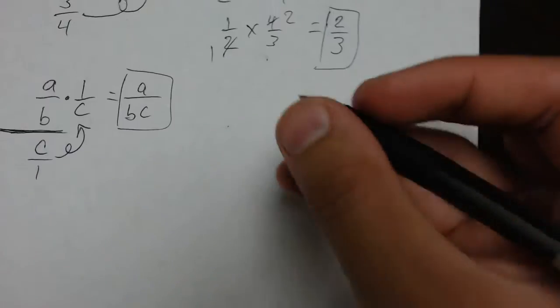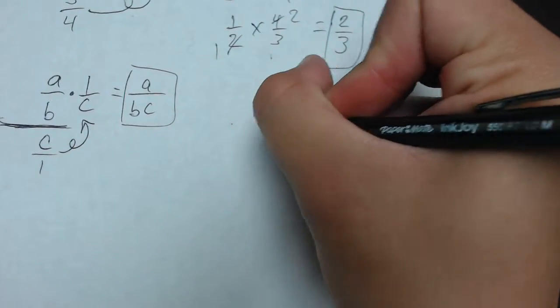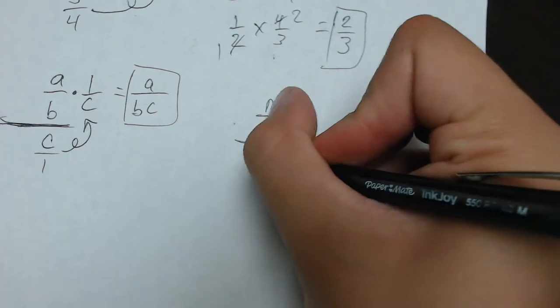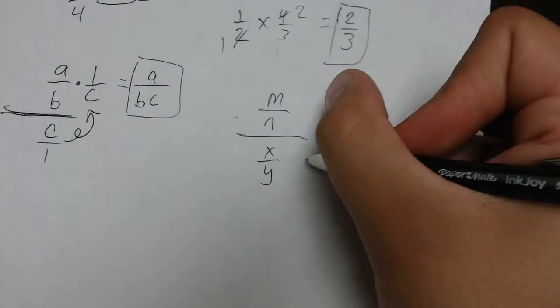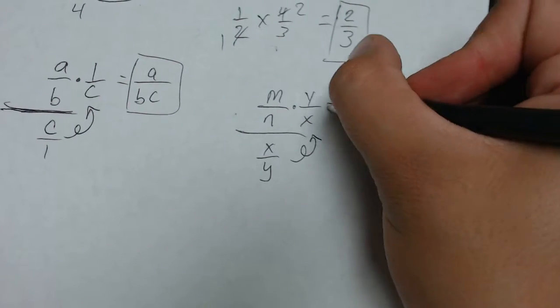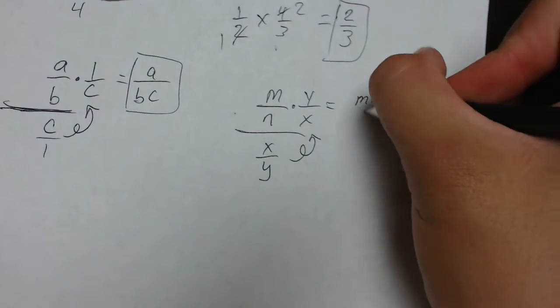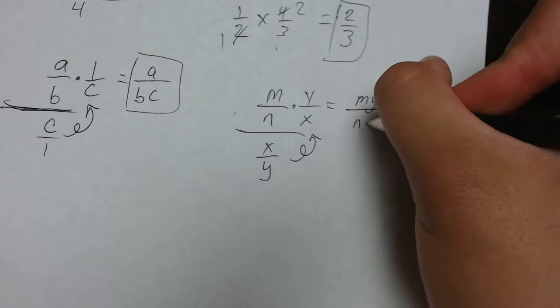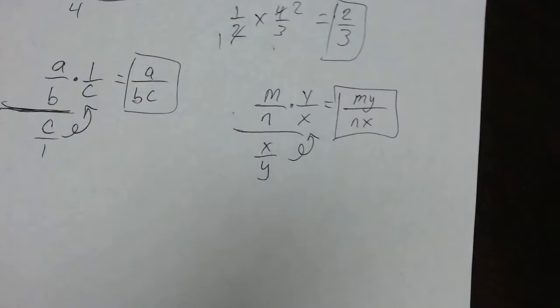What if I have something like this? It's M over N over X over Y. Same thing. I'm just going to use the loop-de-loop rule. It becomes Y over X. That multiplies and it becomes MY over NX. That's my answer there.